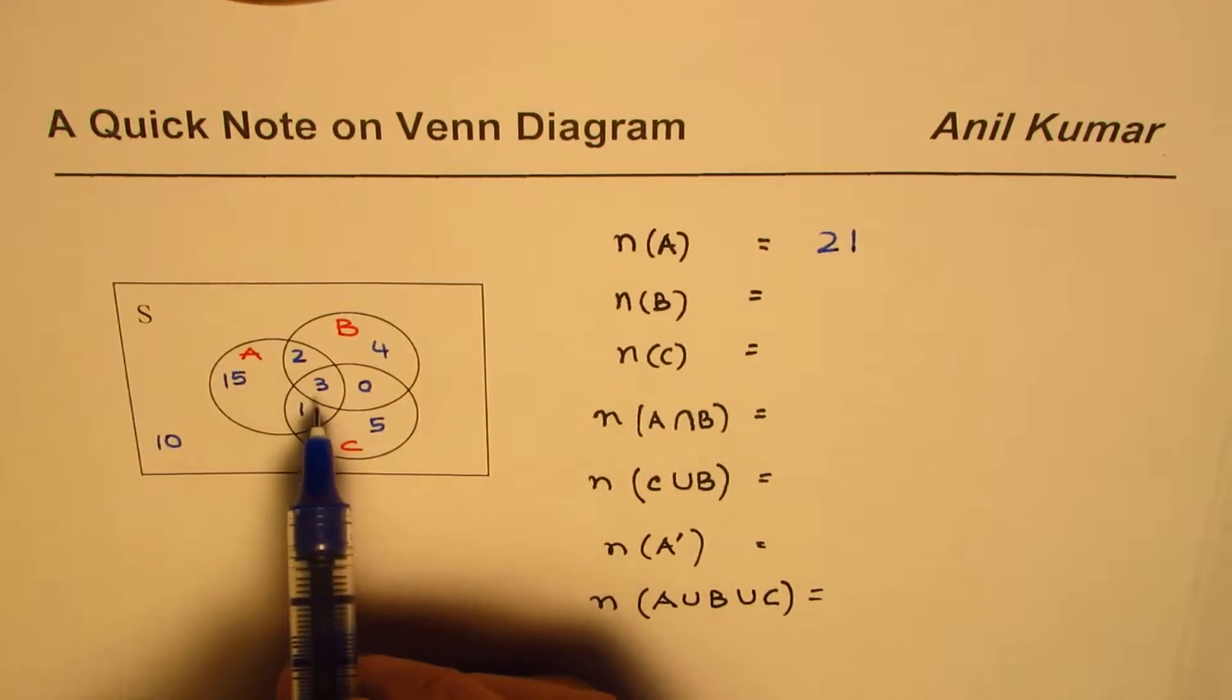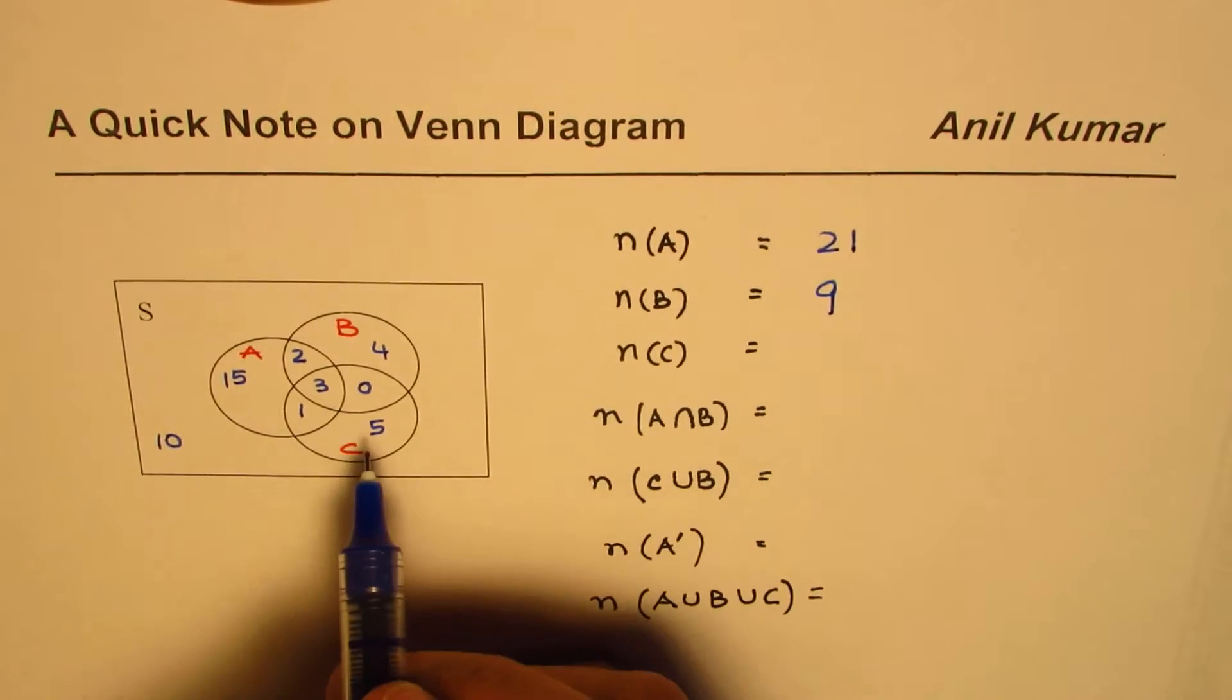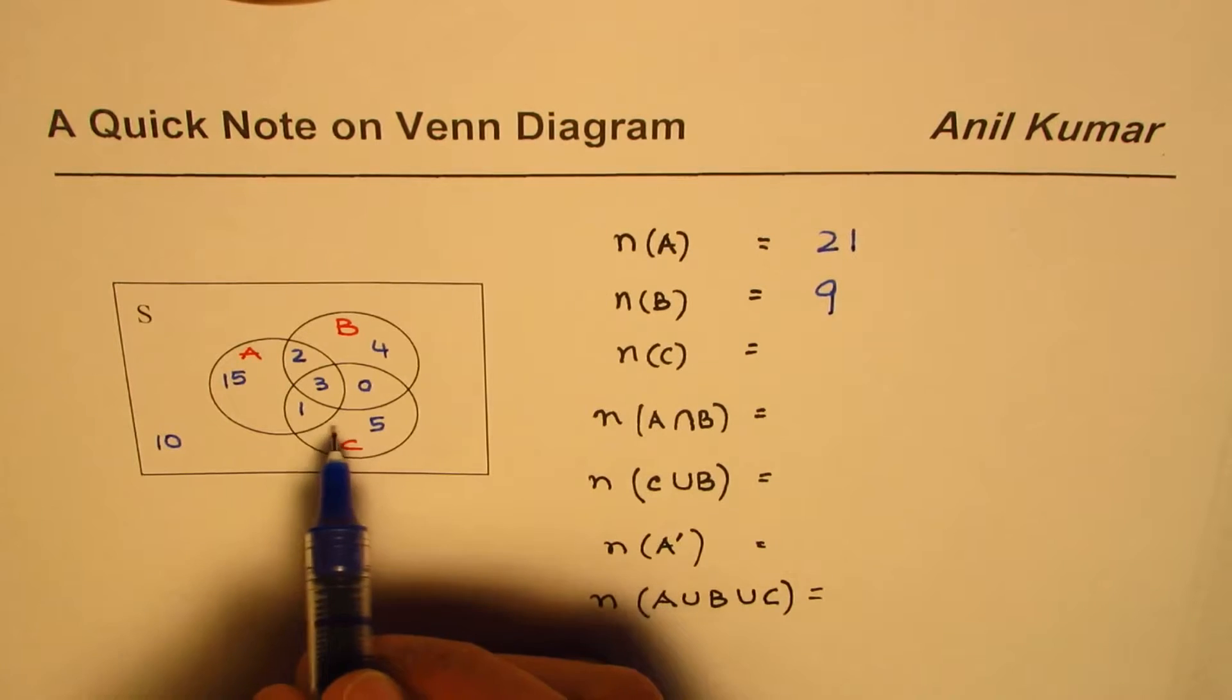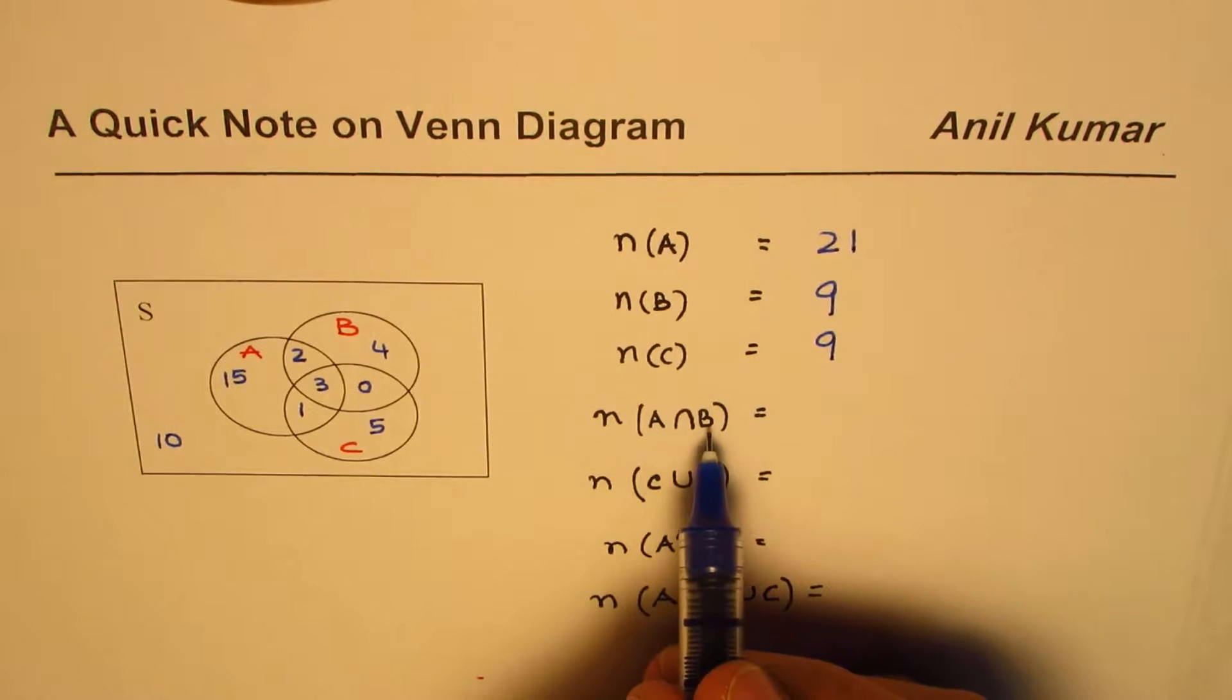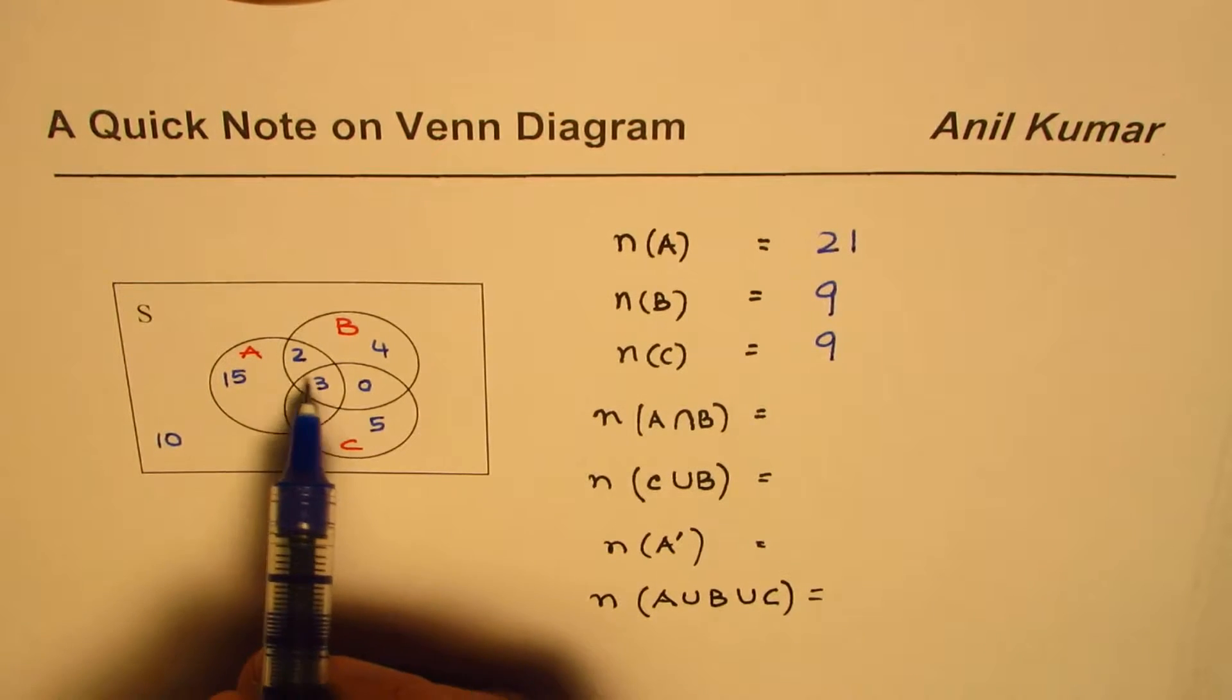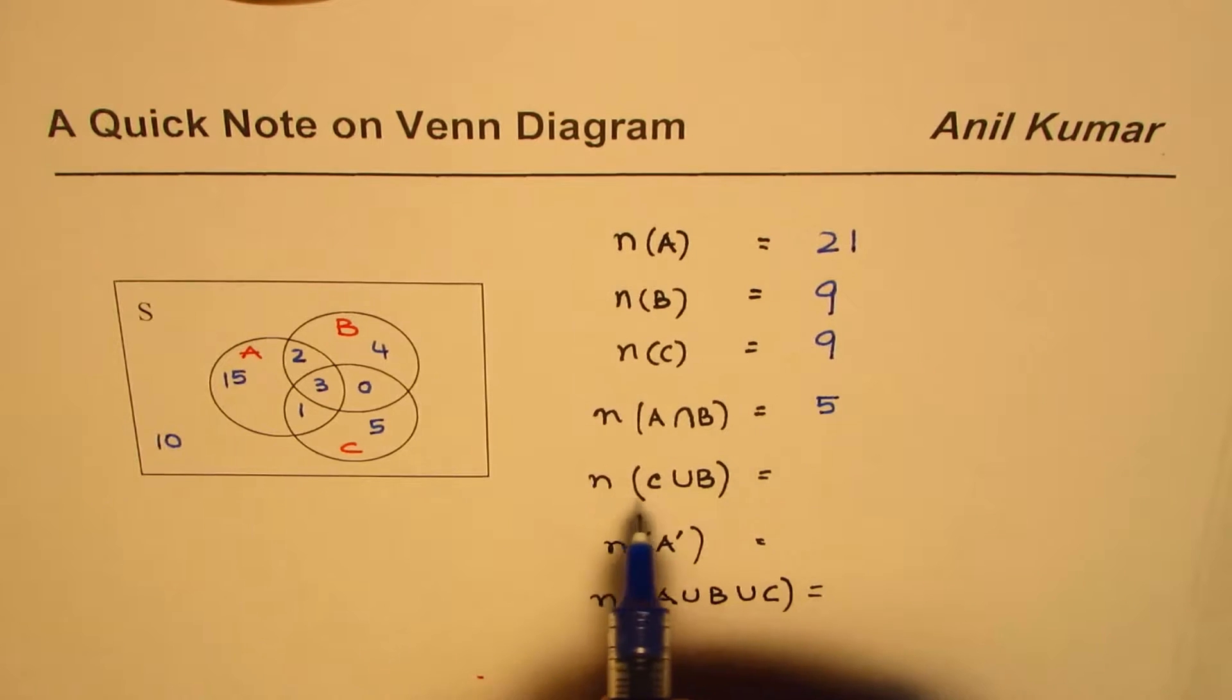Number of elements in B is 4 plus 2 is 6, and 3 is 9. In C we have 5 plus 0 plus 3 plus 1, that means 9. A intersection B: now that means we are talking about which are common to A and B, so these two are common to A and B, 2 and 3, so it is number 5.